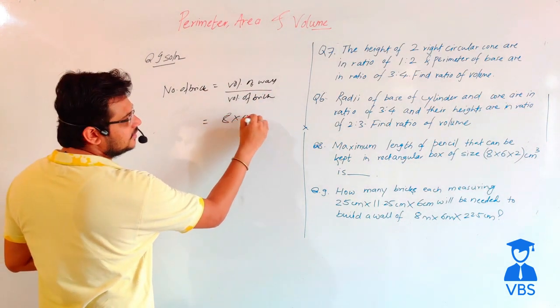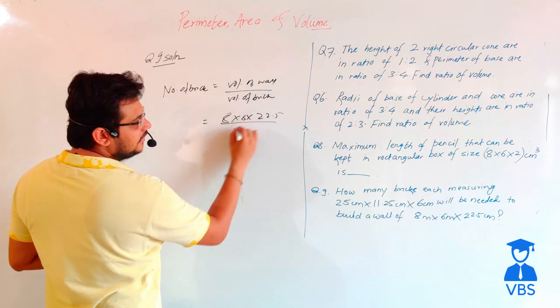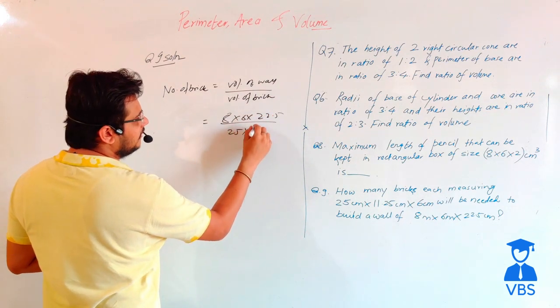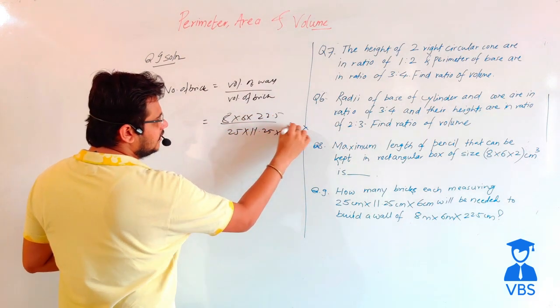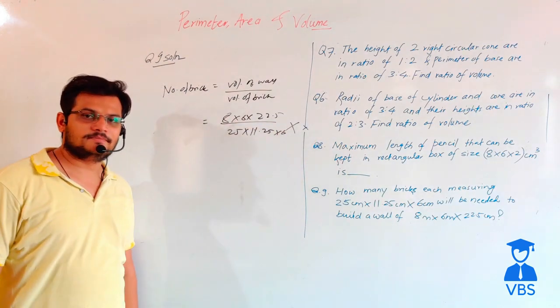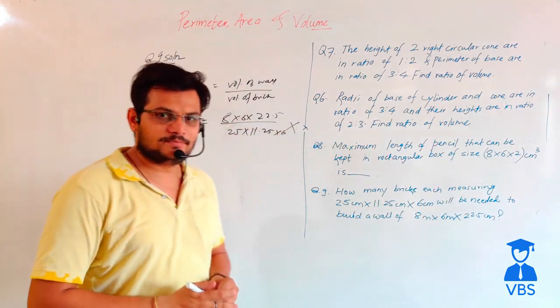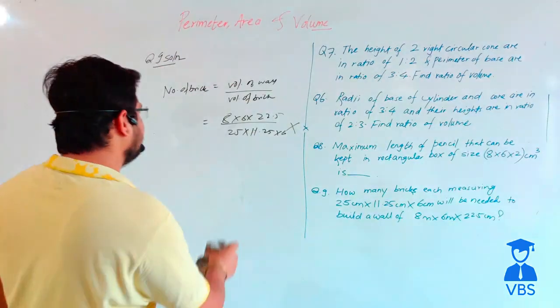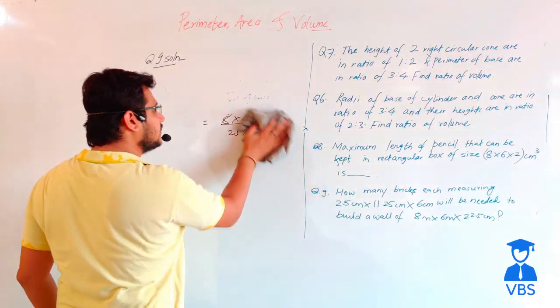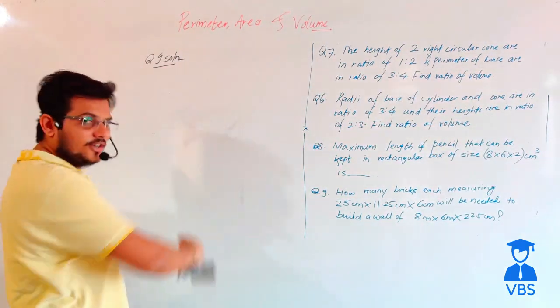So how many bricks is equal to 8 into 6 into 22.5 divided by 25 into 11.25 into 6. The answer is wrong. So why? This question is correct. The answer is wrong.